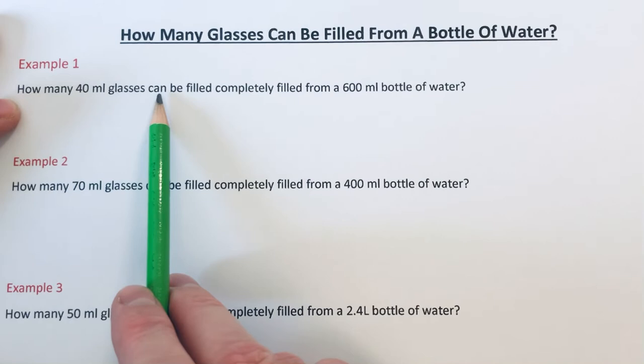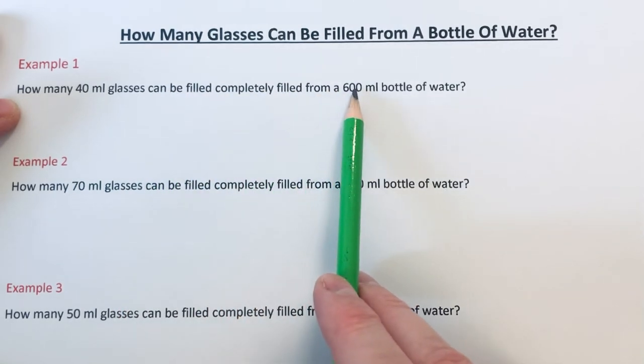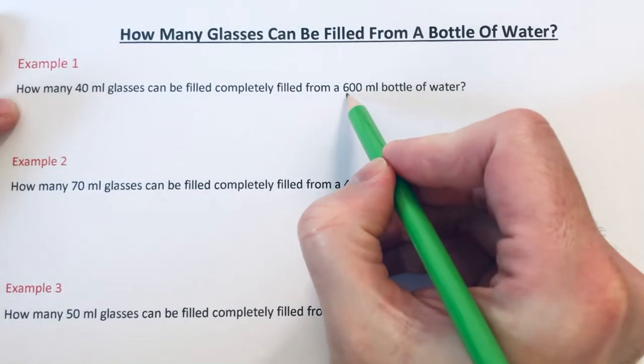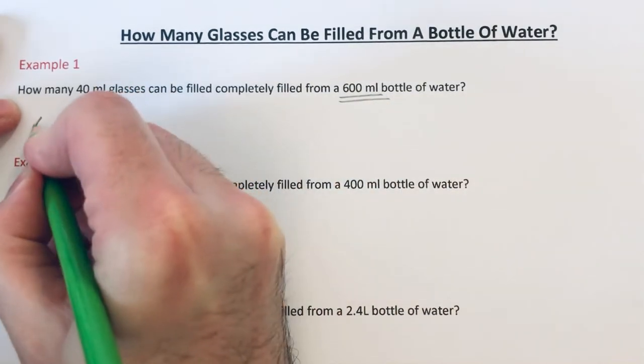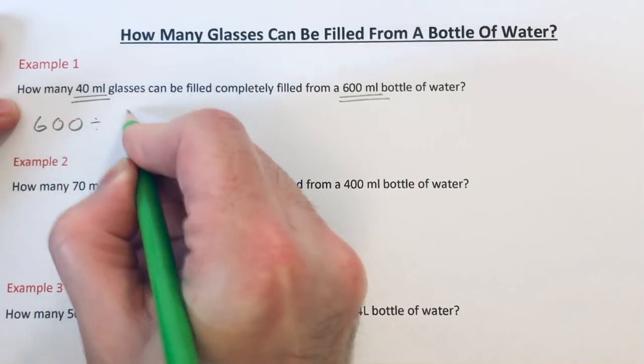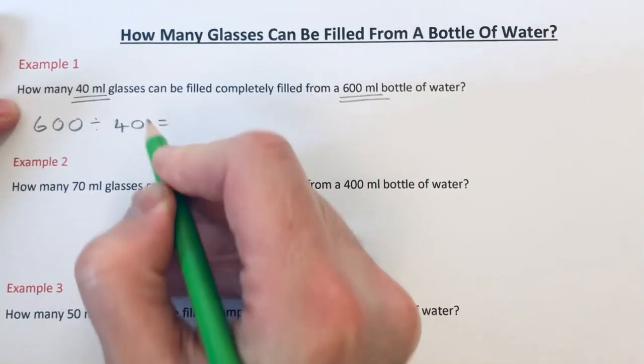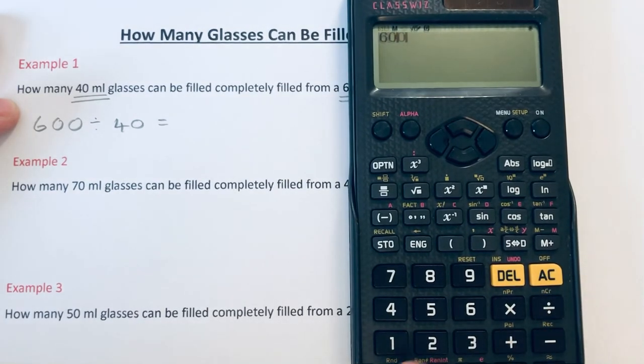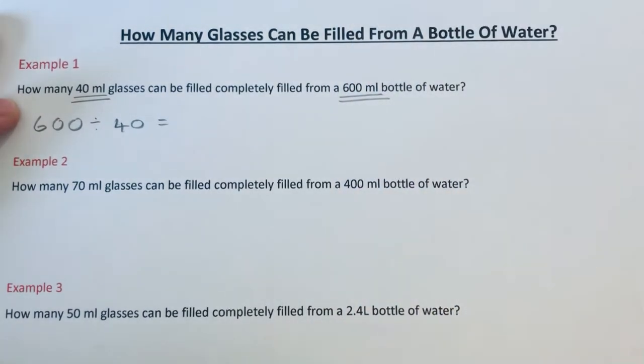40 milliliter glasses can be filled completely from a 600 milliliter bottle of water? To work this out, we just divide the volume of the bottle by the volume of the glass. So the volume of the bottle is 600 milliliters, and we divide this by the volume of the glass which is 40 milliliters. Let's put this on a calculator: 600 divided by 40 comes out as 15 glasses.